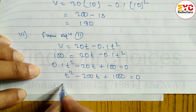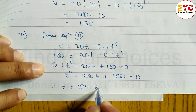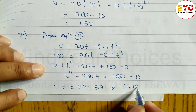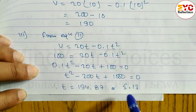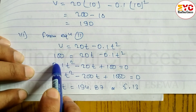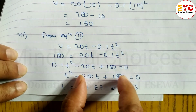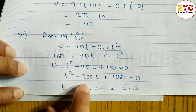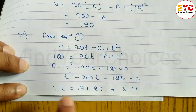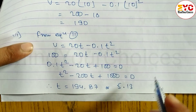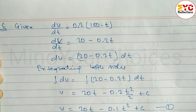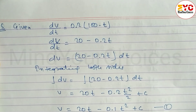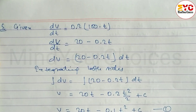Solving the quadratic gives t = 194.87 seconds or t = 5.13 seconds. The meaningful answer is t = 5.13 seconds to fill the 100-litre tank. Hope you understand this question, taken from Differential Equations and its Applications. Please like, subscribe, and share with your friends. Thanks for watching.